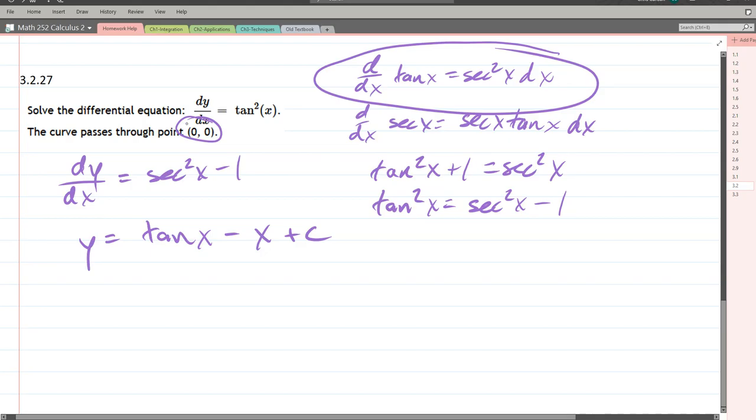The other thing we haven't used yet is our initial condition. Let's go ahead and plug that in. And so that (0, 0), what that means is that's the x, y coordinates. So when x is 0, y has to be 0. And now we're ready to plug that in. So our y is 0 equals tangent 0 minus 0 plus constant.